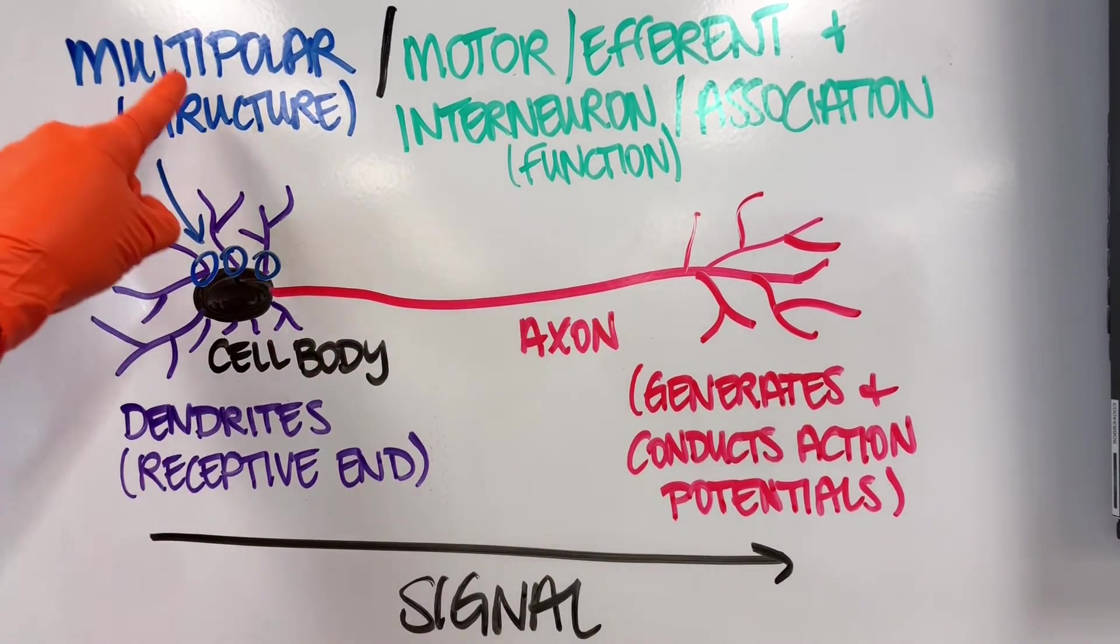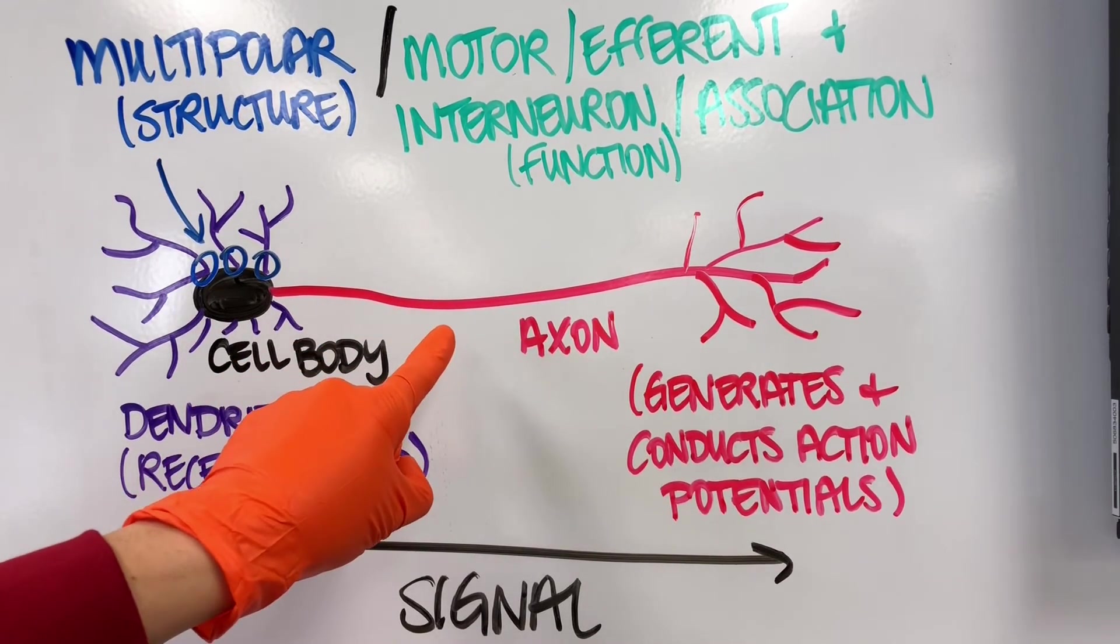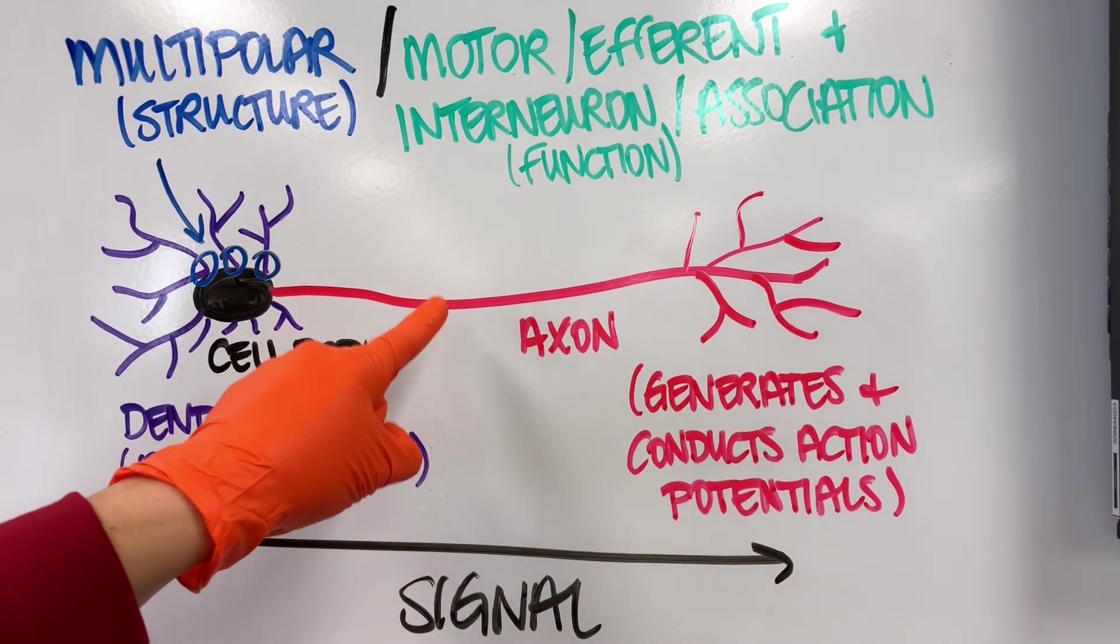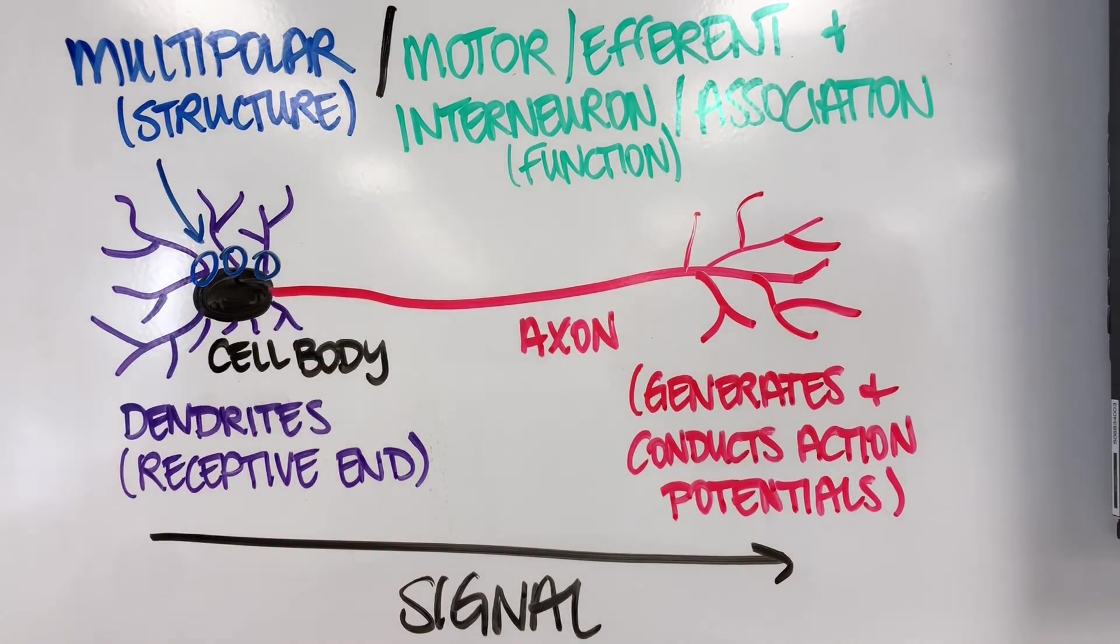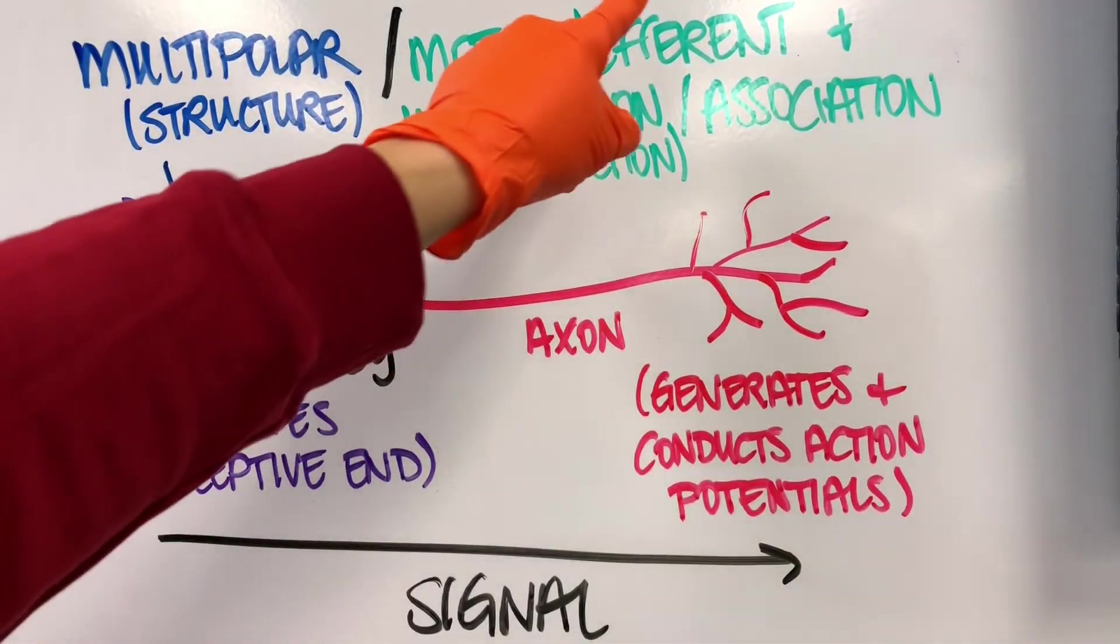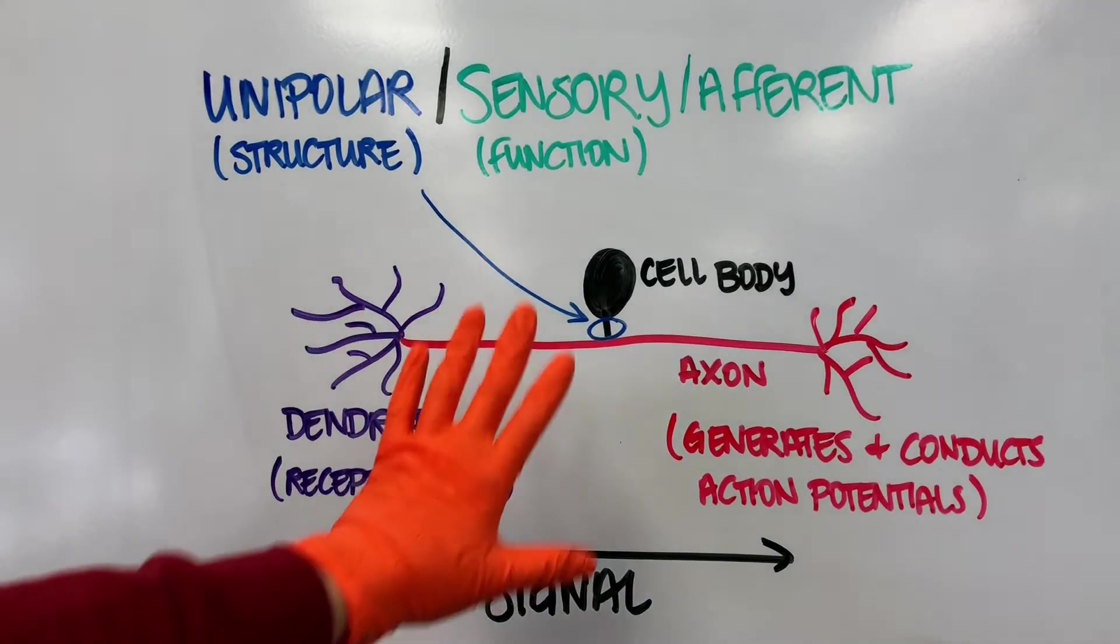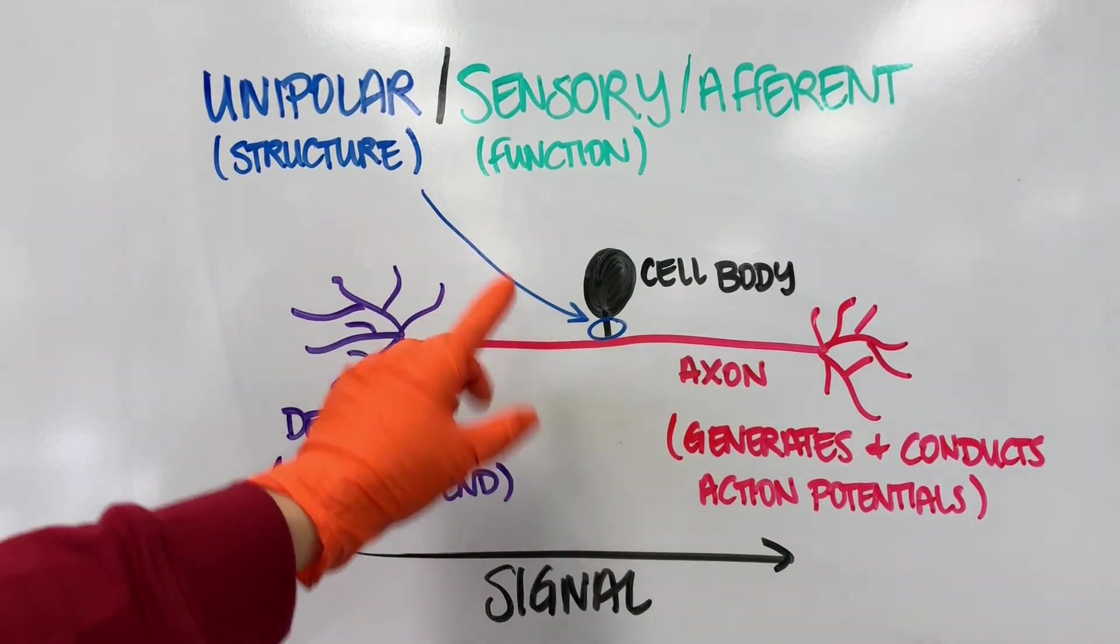But if we're asking about the functional classification—meaning what does a neuron that looks like this do—that would be it's either a motor neuron or an interneuron. We could also call this the efferent or association neuron. The same would be true for this neuron right here. If we wanted to know the functional class, you could call it the sensory or afferent neuron.